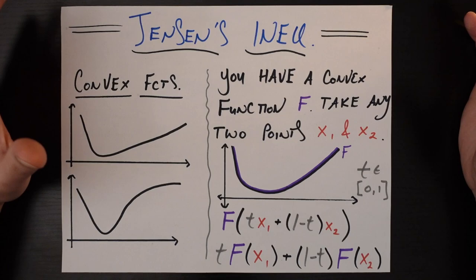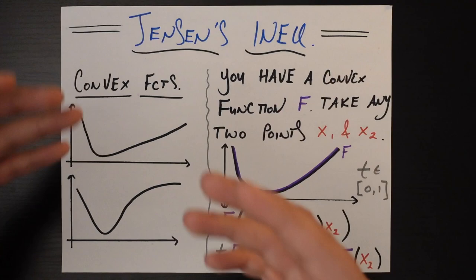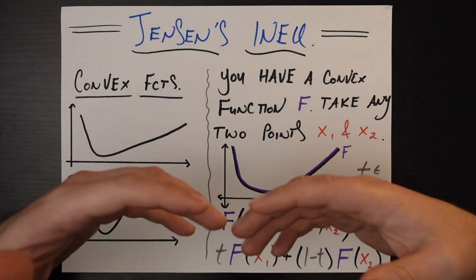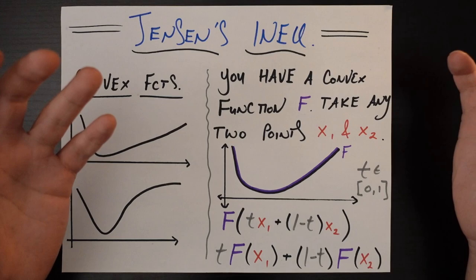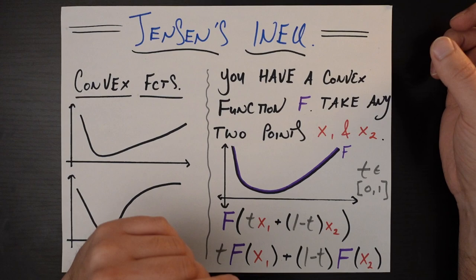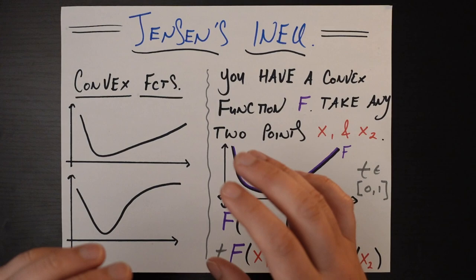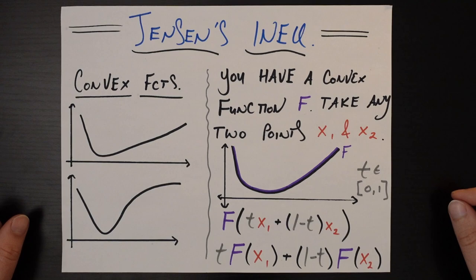When you're studying your foundations of data science, you might be reading through some kind of proof and there'll be a line that says this part is true because of Jensen's inequality. At least for me, those lines often felt very unsatisfying because I kind of forgot what the gist of it was. I'm hoping that by introducing Jensen's inequality in a very graphical, visual way, it'll be a lot easier to remember going forward.